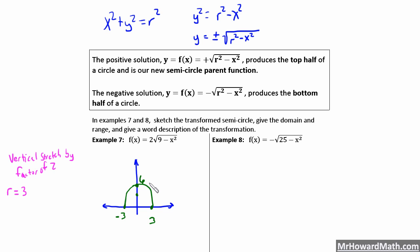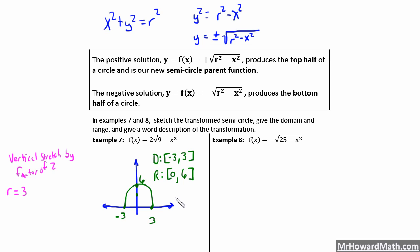For the domain and range: domain, we always start at the leftmost point — that's negative 3 with a bracket since it's included — and go to the rightmost point at positive 3, also with a bracket. For range, we start at the very bottom, which is 0 included, and go to the very top at 6 included. So domain is negative 3 to 3, range is 0 to 6. We were vertically stretched by a factor of 2, and the radius is the square root of 9 which is 3.